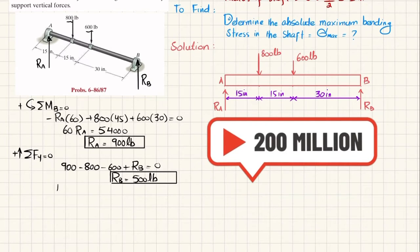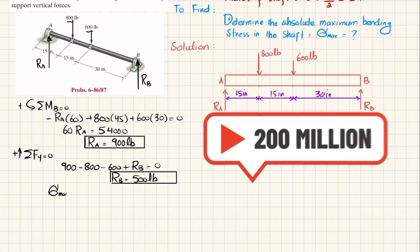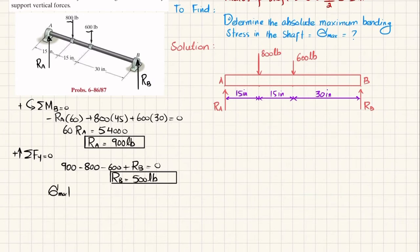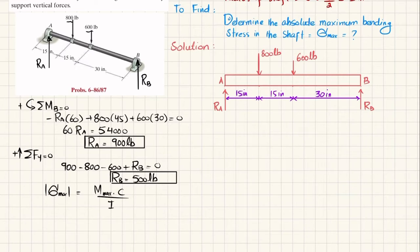Now we have R_A and R_B. The maximum absolute bending stress equals maximum bending moment times c, divided by I. To find the maximum bending moment, we will draw the shear force and bending moment diagrams. We take vertical lines from the ends of the beam and a horizontal line to show the length in inches.